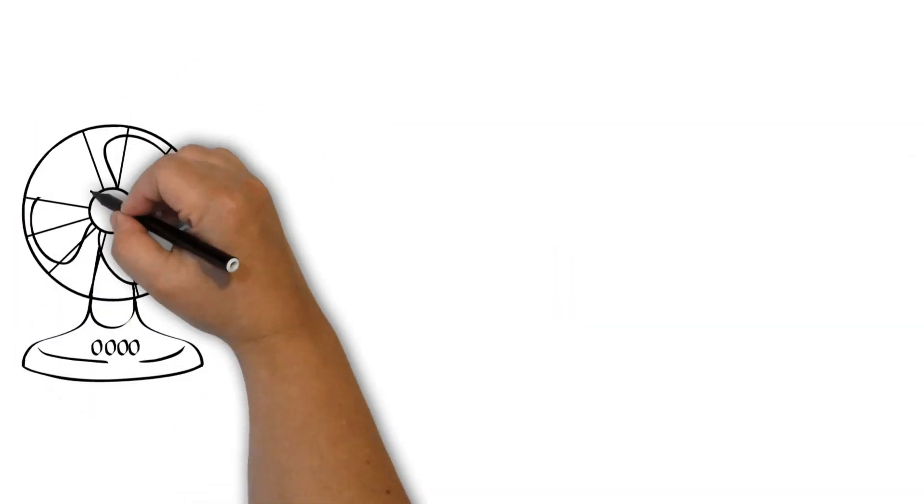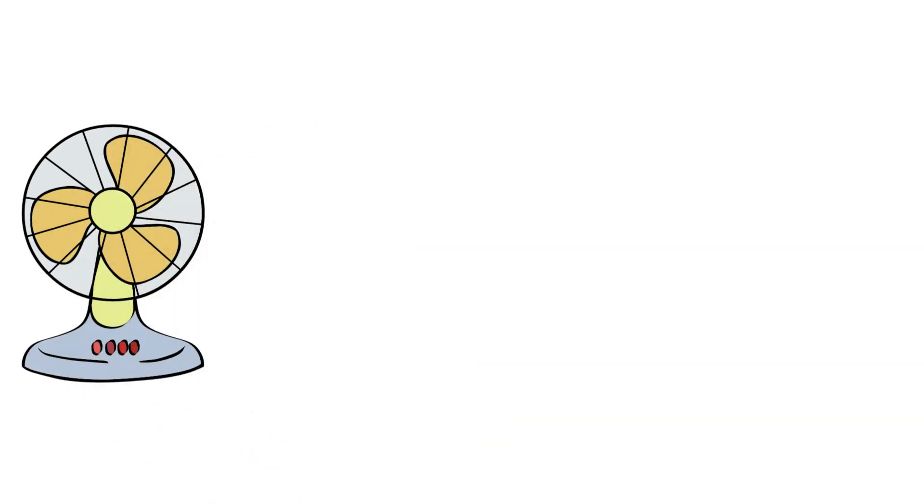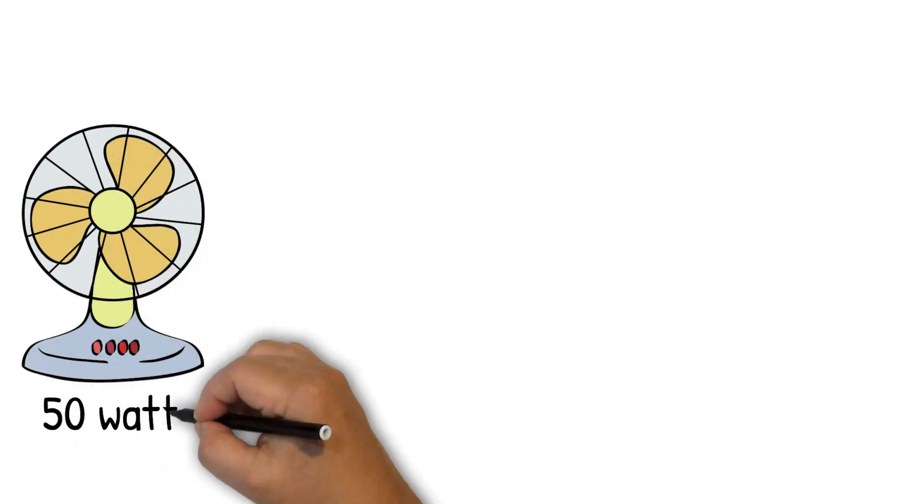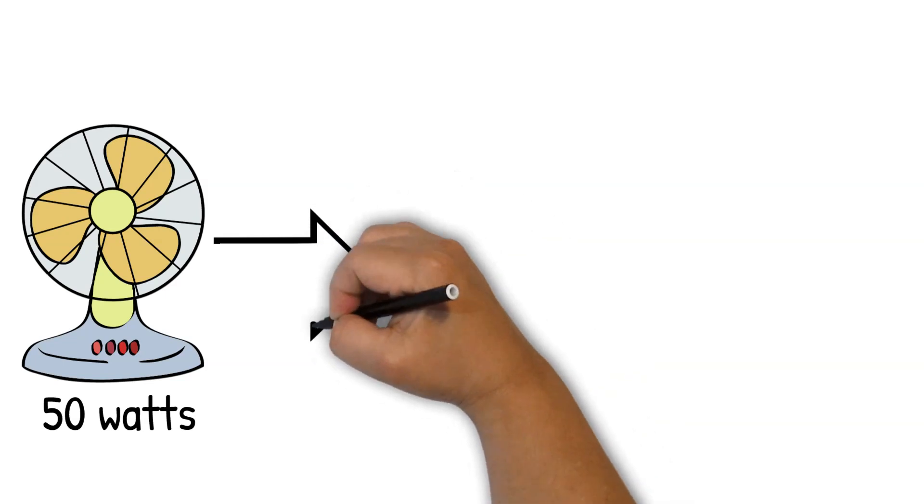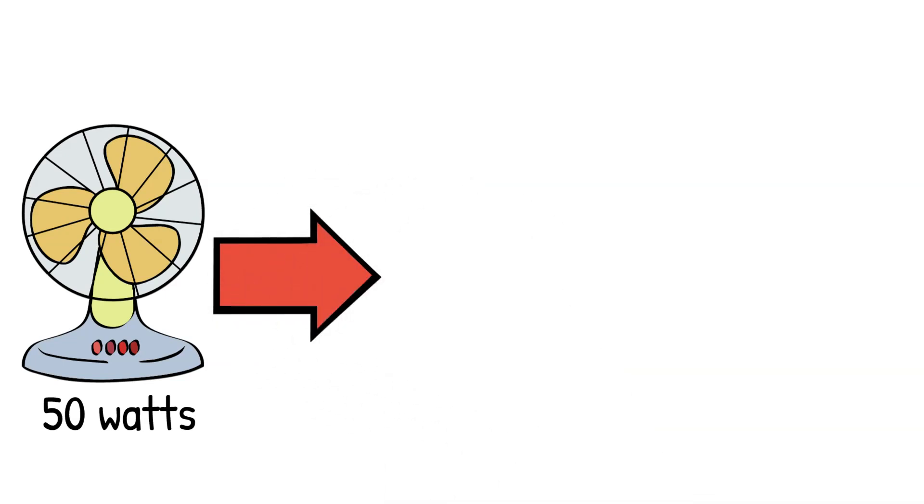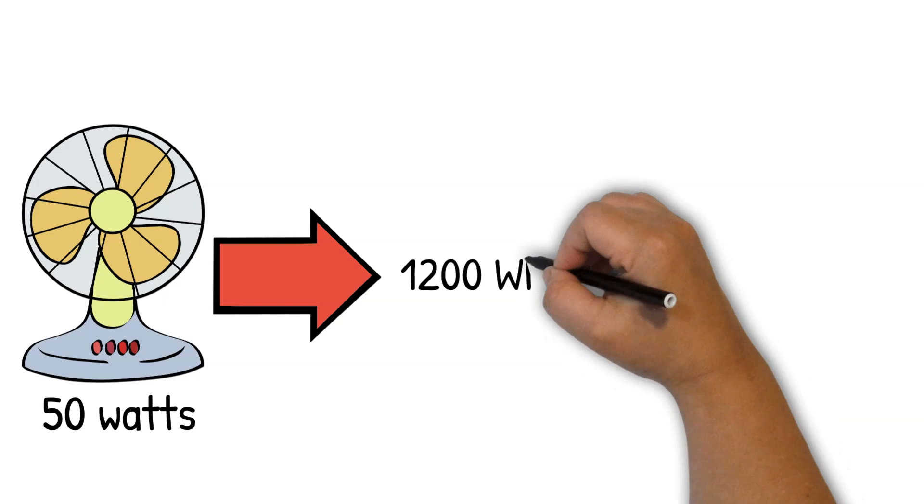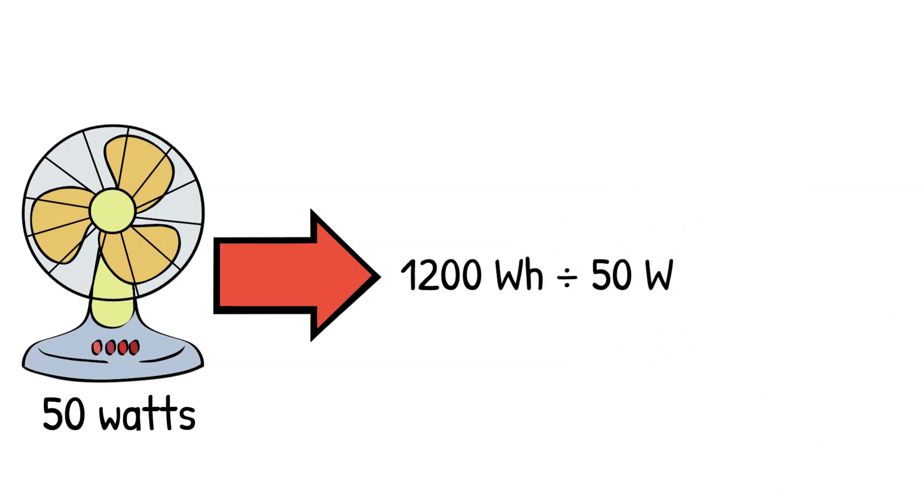Next, we need to know the power consumption of the fan. Let's assume we have a fan that uses 50 watts. To find out how long the battery can run the fan, we divide the battery's capacity by the fan's power consumption. So, in an ideal situation, our 12-volt battery can power the 50-watt fan for about 24 hours.